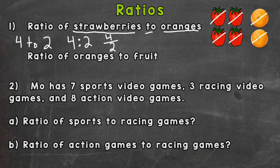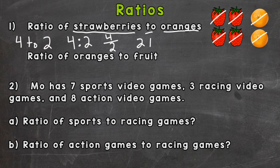With ratios, just like fractions, you always want to simplify if it applies. Four to two can be simplified — we need to find the greatest common factor between four and two. We can divide them both by two: four divided by two is two, and two divided by two is one.